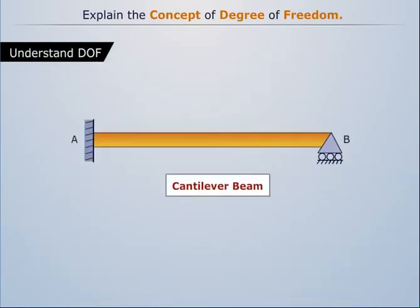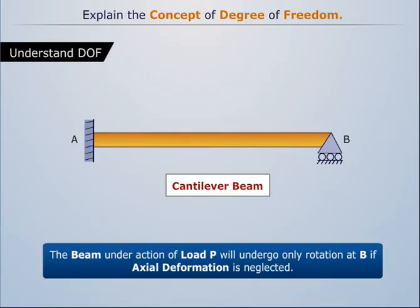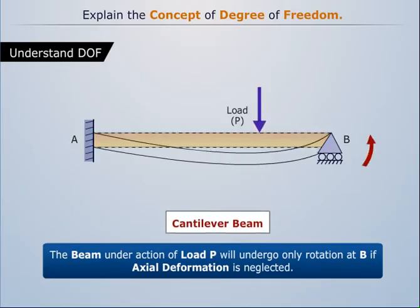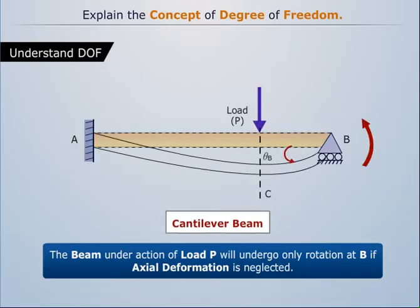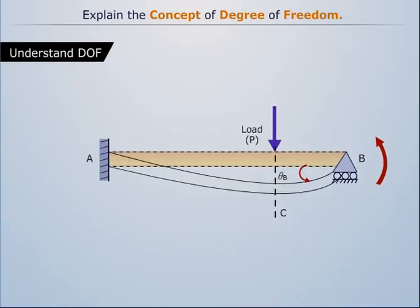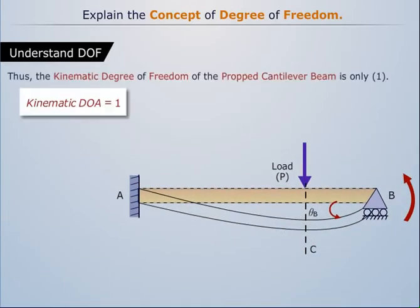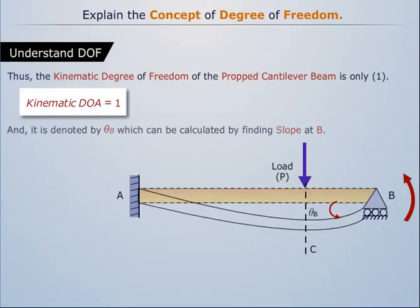The beam, on the action of load P, will undergo only rotation at B if axial deformation is neglected. Thus, the kinematic degree of freedom of the propped cantilever beam is only one, and it is denoted by theta B, which can be calculated by finding slope at B.